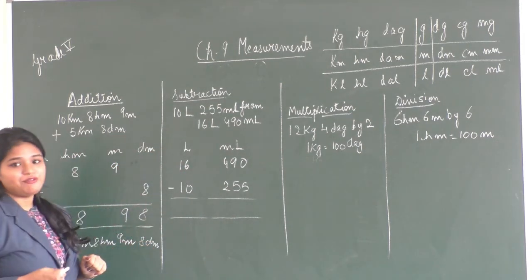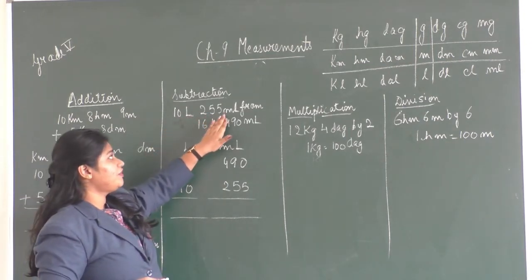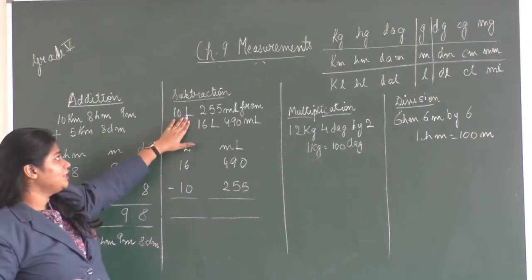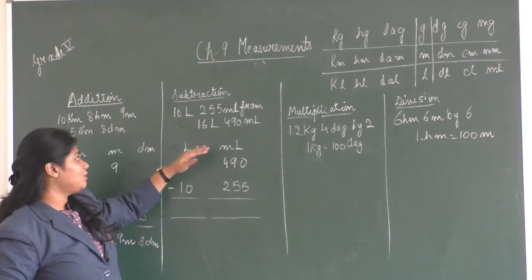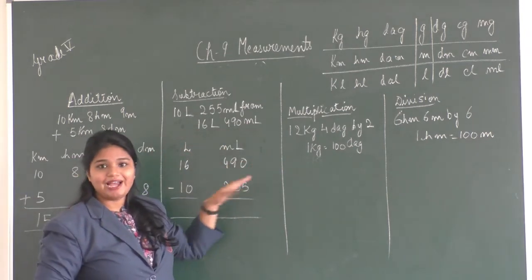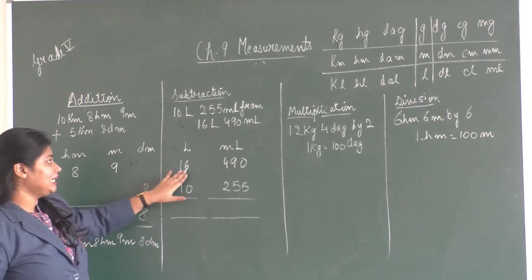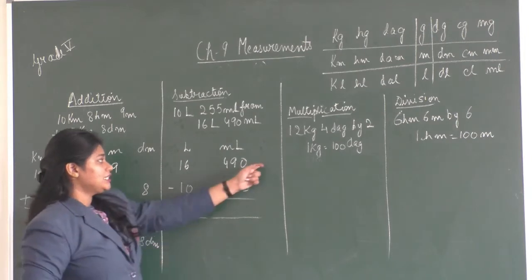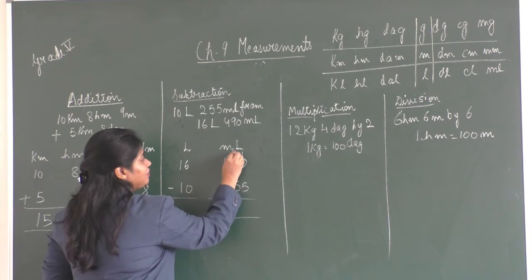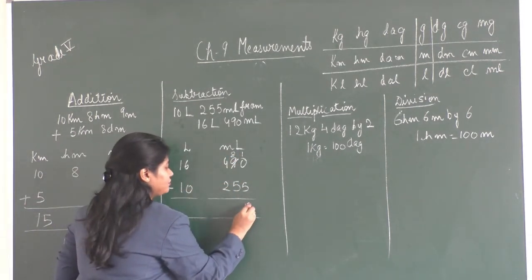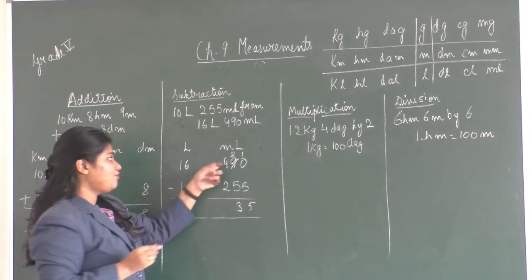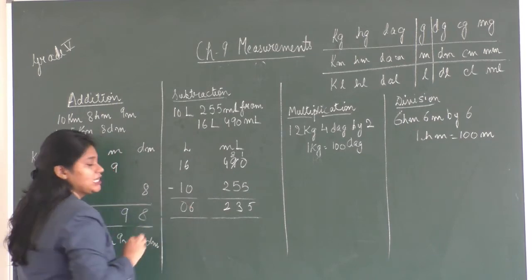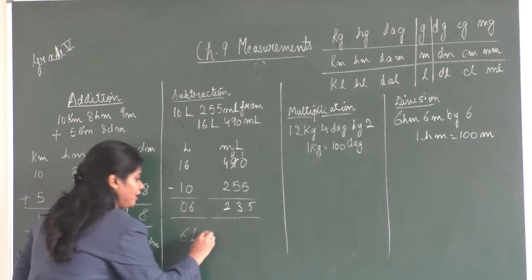For subtraction: subtract 10 liter 255 milliliters from 16 liter 490 milliliters. We write columns for liter and milliliter. Starting with the milliliter column: 490 − 255. Since 0 − 5 is not possible, we borrow — 10 − 5 = 5, 8 − 5 = 3, 4 − 2 = 2, giving 235 milliliters. For the liter column: 6 − 0 = 6 and 1 − 1 = 0. The answer is 6 liters, 235 milliliters.